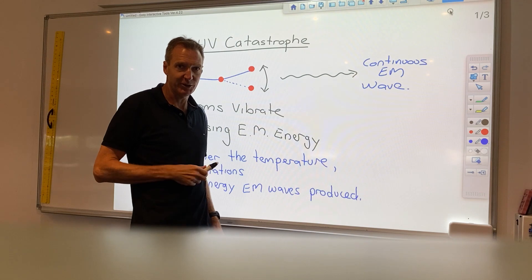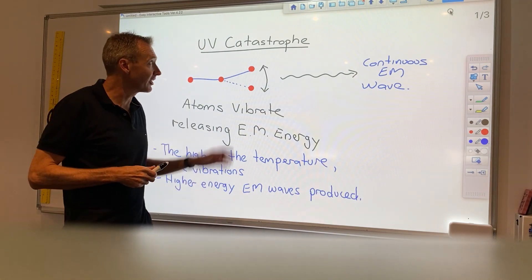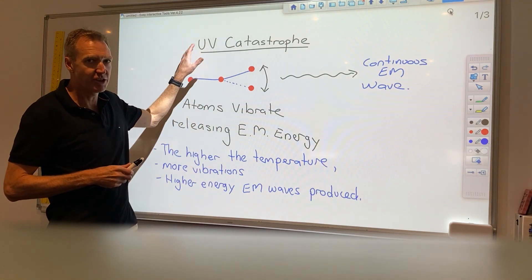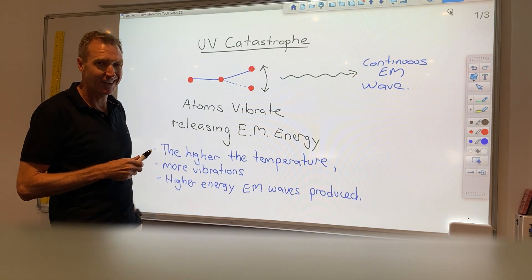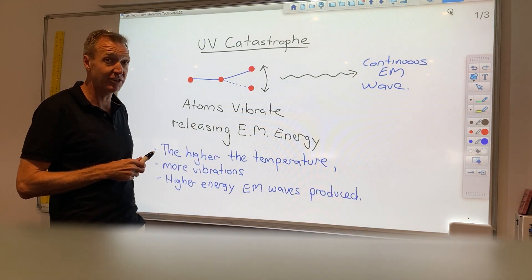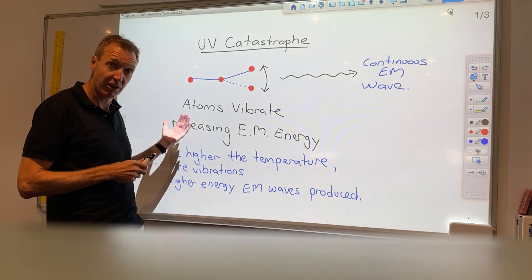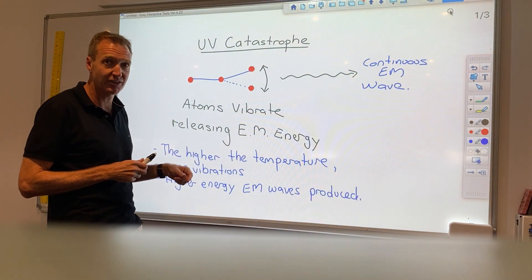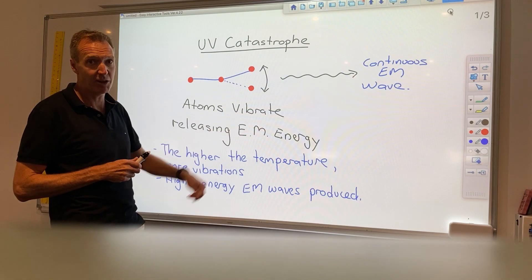Okay, morning boys. I'm not sure how this is going to work, but I'm going to do my best. We're going to go through the UV catastrophe and try to explain it in terms of black body radiation, going from classical physics to modern physics and why we needed a change in mathematics to get this to work.